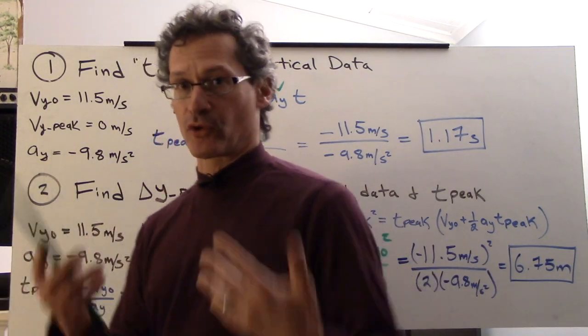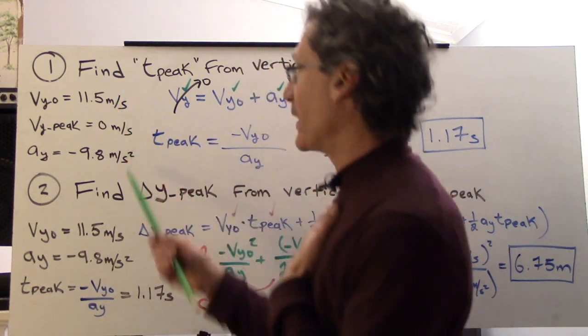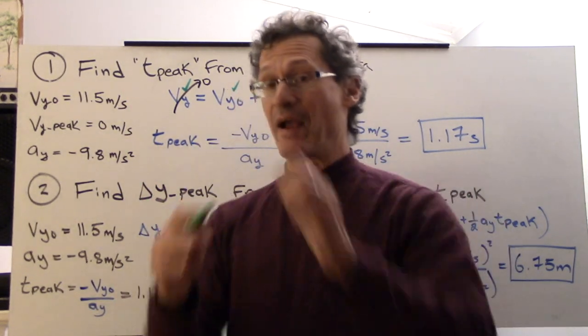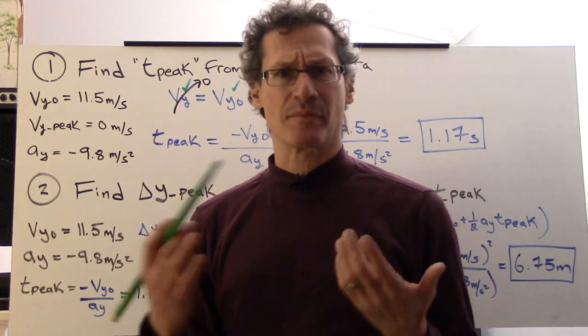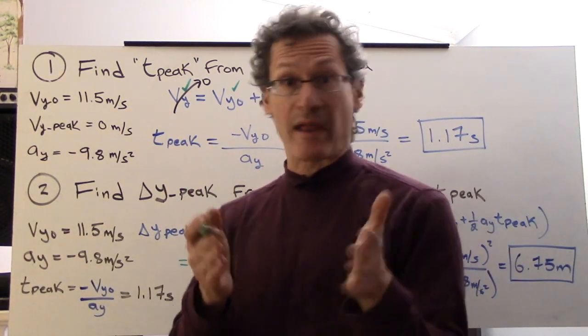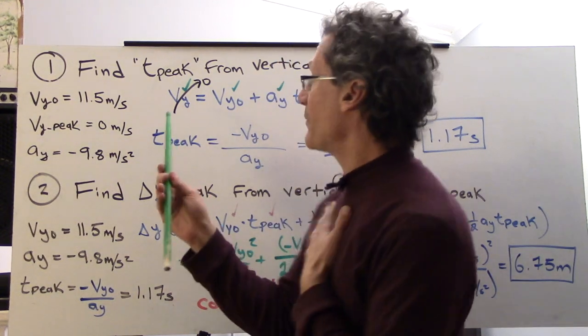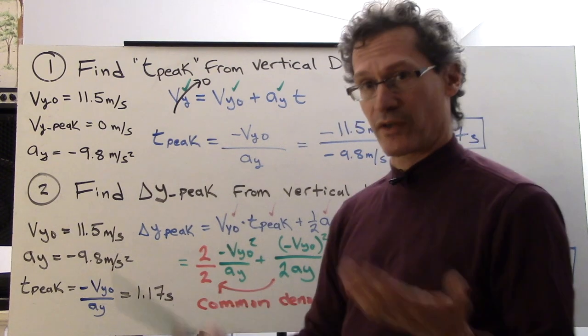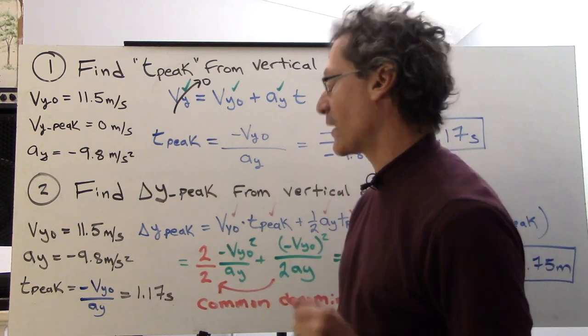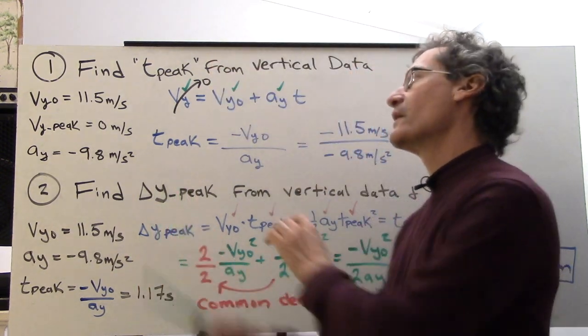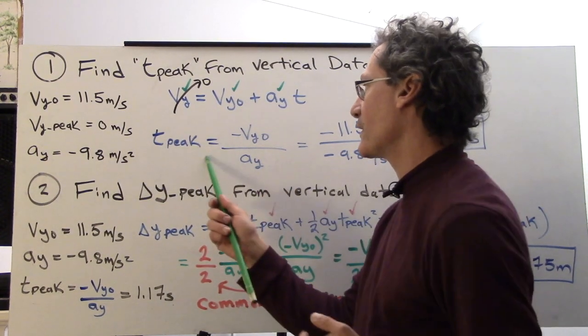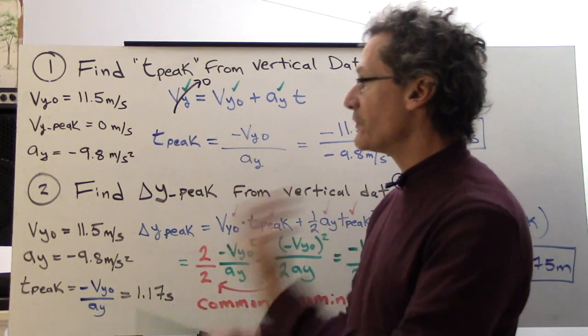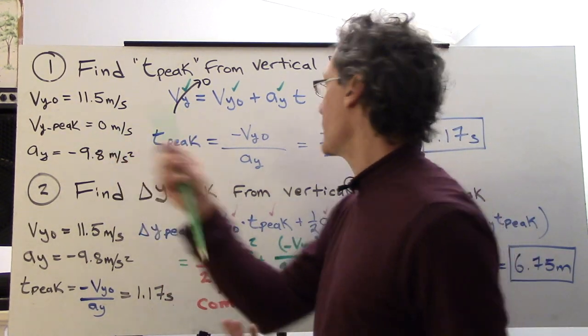Let's find t-peak from the vertical data. Since you're great note takers, you have all these set up in the variables matrix for 2D projectile motion. I chose the equation vy equals vy-naught plus ay*t, the first one from our kit of kinematic equations of motion. So we have t-peak is negative vy-naught divided by ay when I solve this out, knowing that vy is zero at the peak.